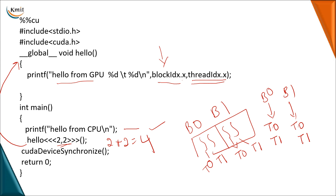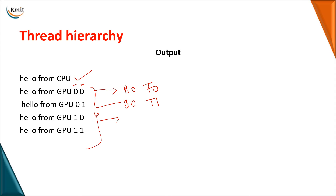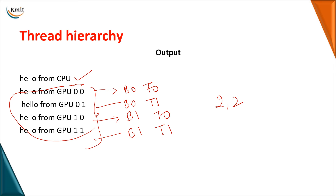When you execute the program, you could see the output first from your GPU, related to block zero and thread one, and two statements related to block one and thread one. So without using a loop statement, calling the function with <<<2, 2>>> means the statement will be printed four times onto the monitor.